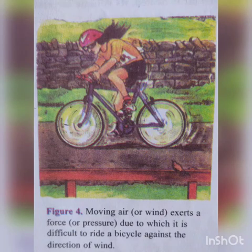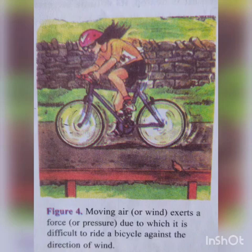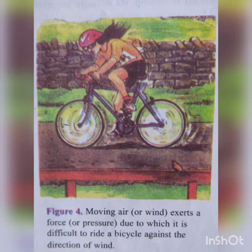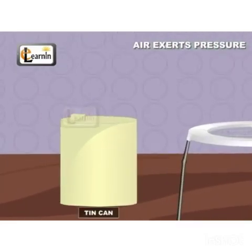Here is one example. Moving air exerts a force, due to which it is difficult to ride a bicycle against the direction of wind. When we ride a bicycle and the wind is coming from our back side, we move easily because our cycle moves faster. But on the other hand, if the wind is not coming from our back side, it is very difficult to ride against the wind.